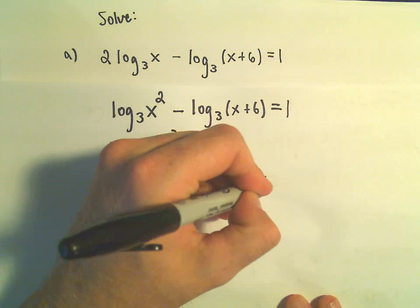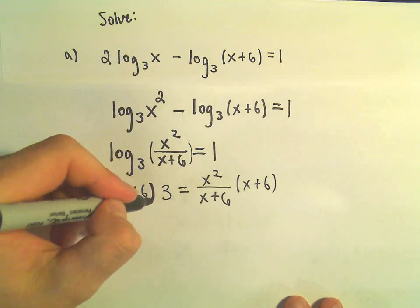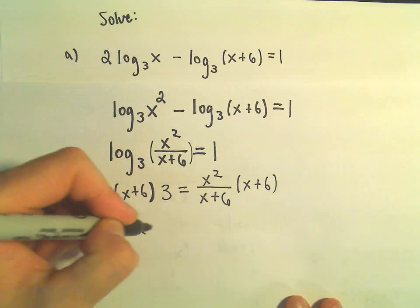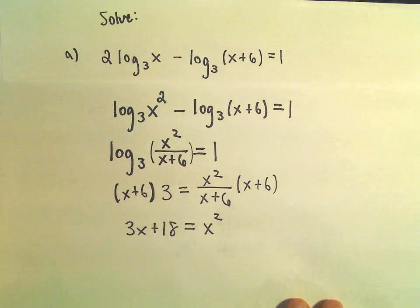And now I'm just going to multiply both sides by x plus 6. On the left side, we would have to distribute our positive 3. That would give us 3x plus 18 equals x squared on the right.